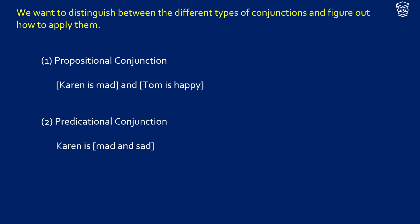Propositional conjunction takes two sentences and combines them to create a new sentence — for example, 'Karen is mad and Tom is happy.' You can think of it as proposition and proposition, like P and Q. But in the case of predicational conjunction, we're not getting a truth value. What we're doing is getting some other argument, some predicate — 'mad and sad' — which is like saying MX and SX, for X is mad and X is sad. So we can see a bit of a difference there.